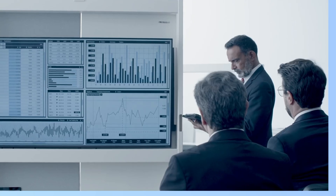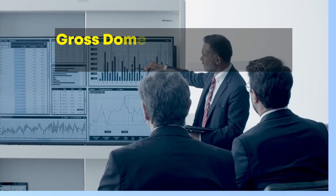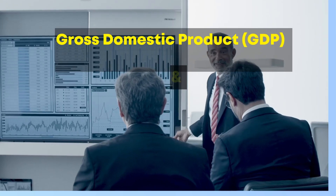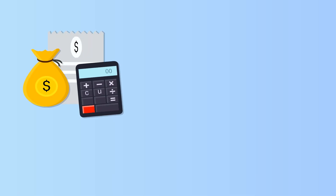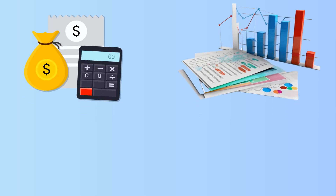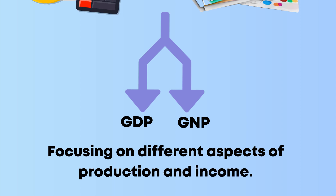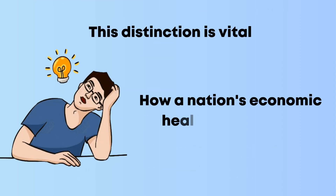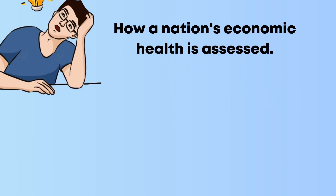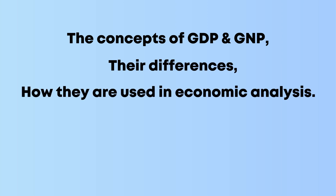In the world of economics, two terms frequently emerge when discussing the health of an economy: gross domestic product, or GDP, and gross national product, or GNP. While both measure the economic output of a country, they do so in slightly different ways, focusing on different aspects of production and income. This distinction is vital for understanding how a nation's economic health is assessed. Let's break down the concepts of GDP and GNP, their differences, and how they are used in economic analysis.